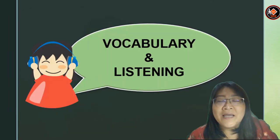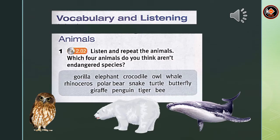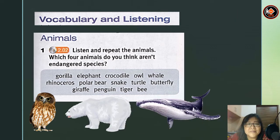Now we are doing vocabulary and listening. Unit 4: Vocabulary and Listening — Animals, Exercise 1. Here are the animals: gorilla, elephant, crocodile, owl, whale, rhinoceros, polar bear, snake, turtle, butterfly, giraffe, penguin, tiger, bee, monkey, bear. Students, which four animals do you think are not endangered species?